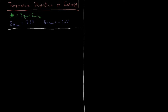We know that entropy, dS, was equal to dq_rev over T. So, multiplying both sides by T, we have that the reversible heat differential is equal to TdS.